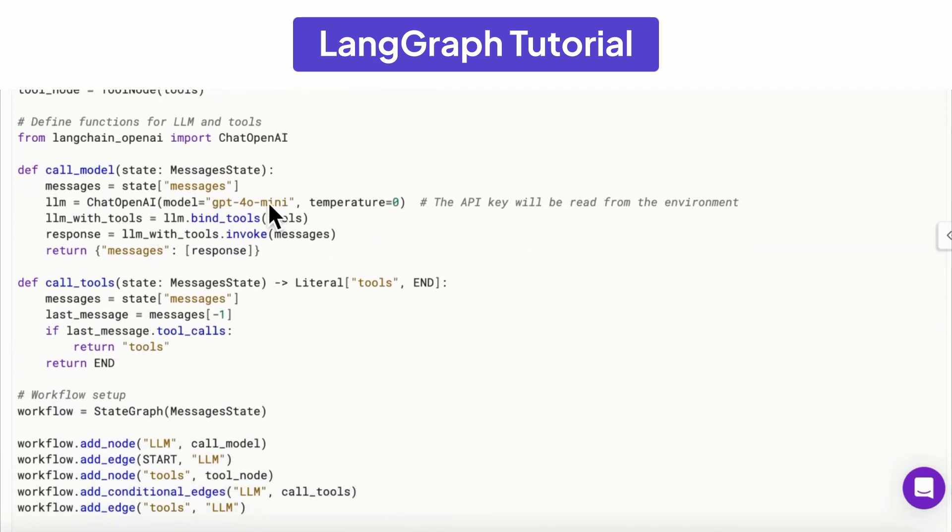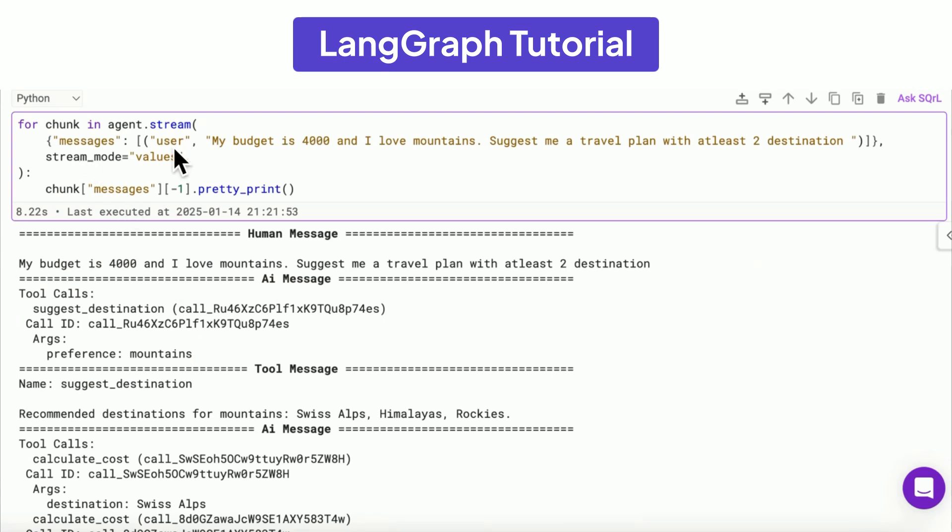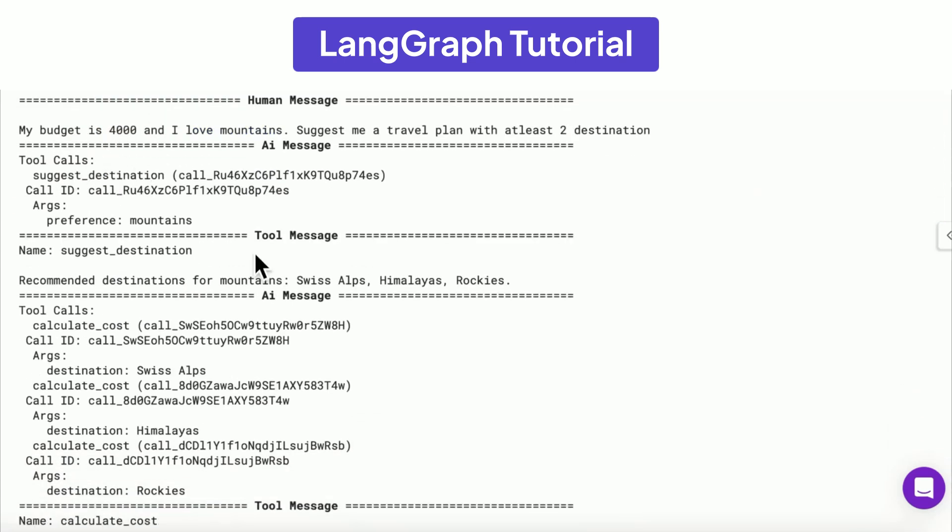And then, at the end, we will also ask a message like, my budget is $4,000 and I love mountains. Suggest me some good destinations.